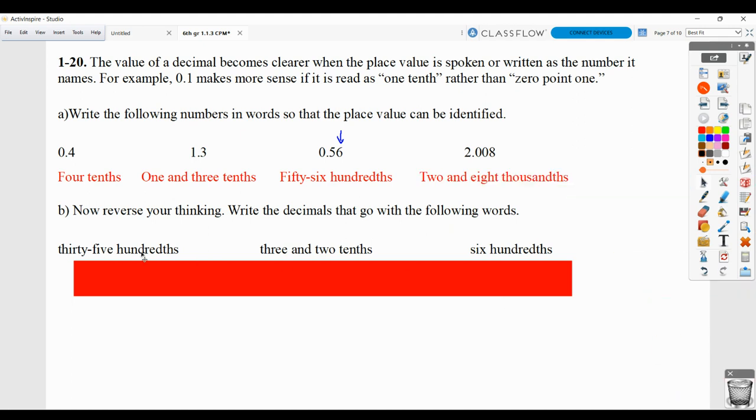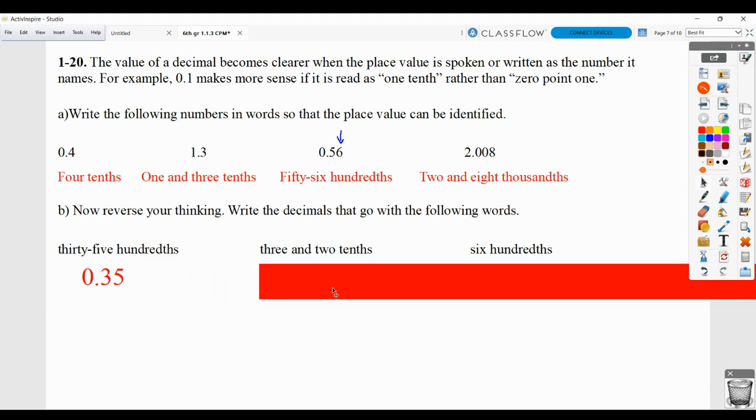Now they want us to take these words and translate them to decimals. So 35 hundredths means we would need to have 35 behind the decimal point, and the five would have to land in the hundredths place. So it would look like this. Three and two tenths means we'd have a three in front of the decimal point. The and would be the decimal point. And then two tenths means two in the tenths place.